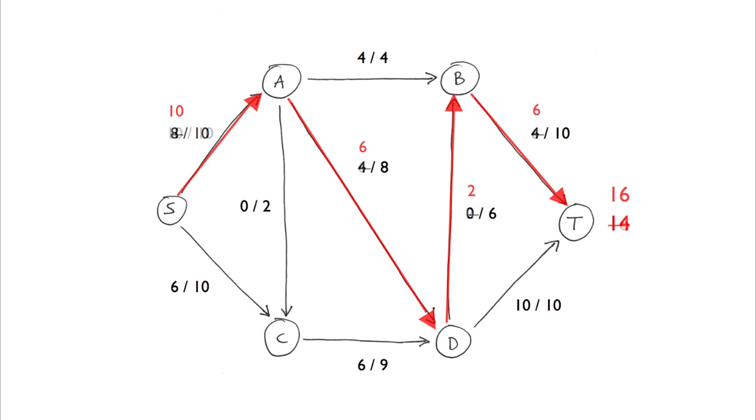Again, let's search for a path and augment the flow. We now have a flow value of 19. One more time, let's search for a path.